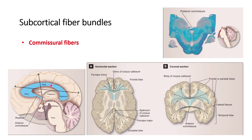Then is the corpus callosum — this is the really big one, with different parts. Starting with the rostrum, then it goes to the genu, which is located anteriorly — genu means knee. Around the genu, you can see the shorter fibers called forceps minor. Then is the body, which is the bigger part connecting the cortices of the two cerebral hemispheres. Finally, the splenium is located posteriorly and connects the occipital lobes. The body connects the frontal and parietal lobes, and the genu connects the frontal lobes on the two sides.